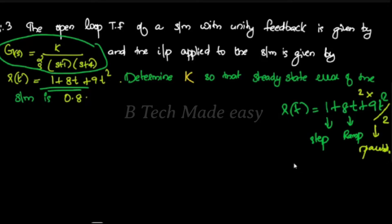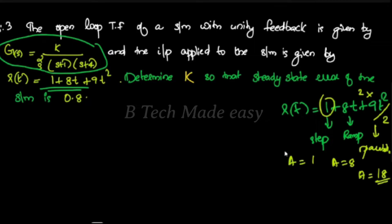Step input is 1. The ramp coefficient A is 8. The parabola coefficient A is 18. So the step input value is 1, ramp coefficient is 8, and parabola coefficient is 18.